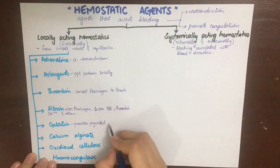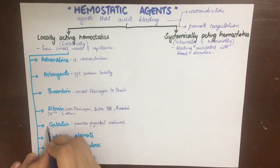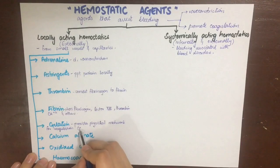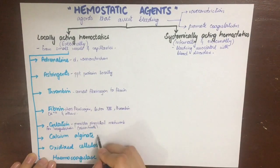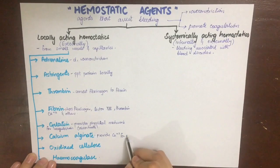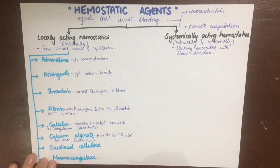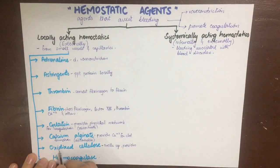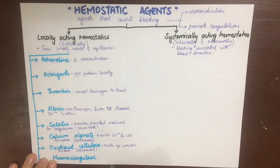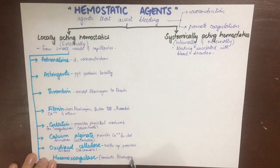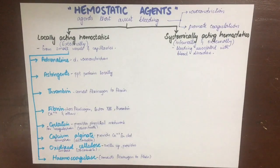Gelatin provides a physical meshwork on which clotting can occur, and it is absorbable. Calcium alginate provides calcium for clot formation; it is also absorbable and promotes wound healing. Oxidized cellulose is applied dry but then swells up to provide a surface for coagulation. It is also absorbable. Heme coagulase is an enzyme that converts fibrinogen to insoluble fibrin, thereby promoting clot formation.